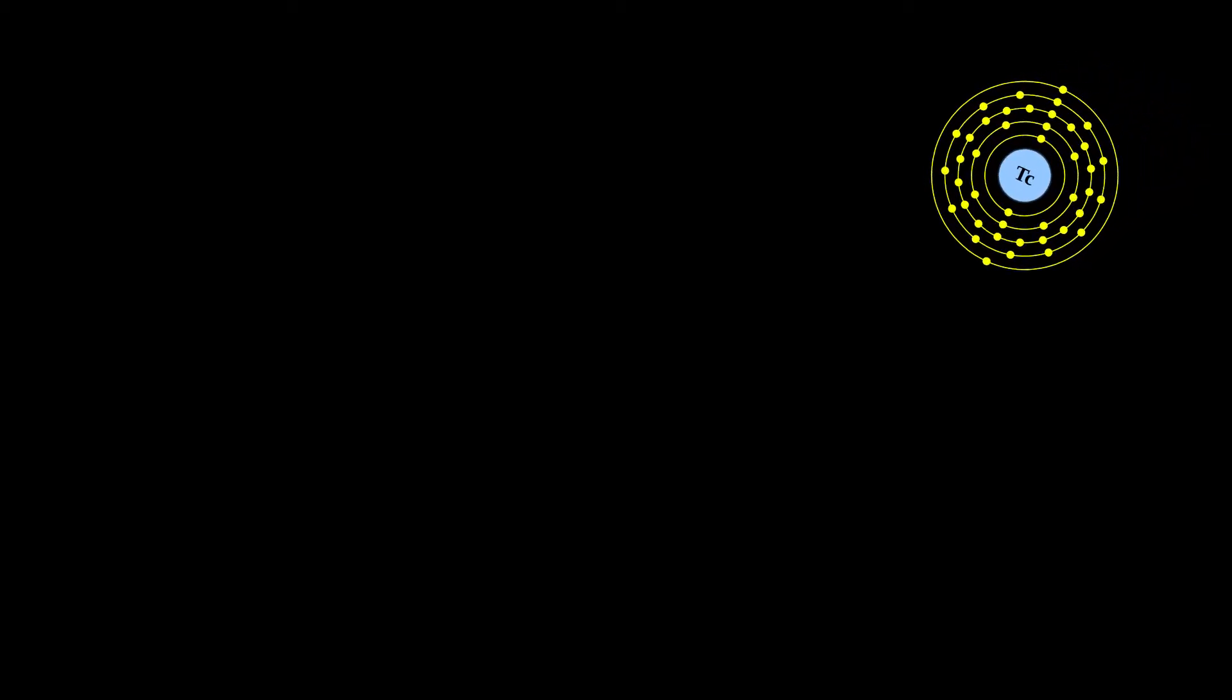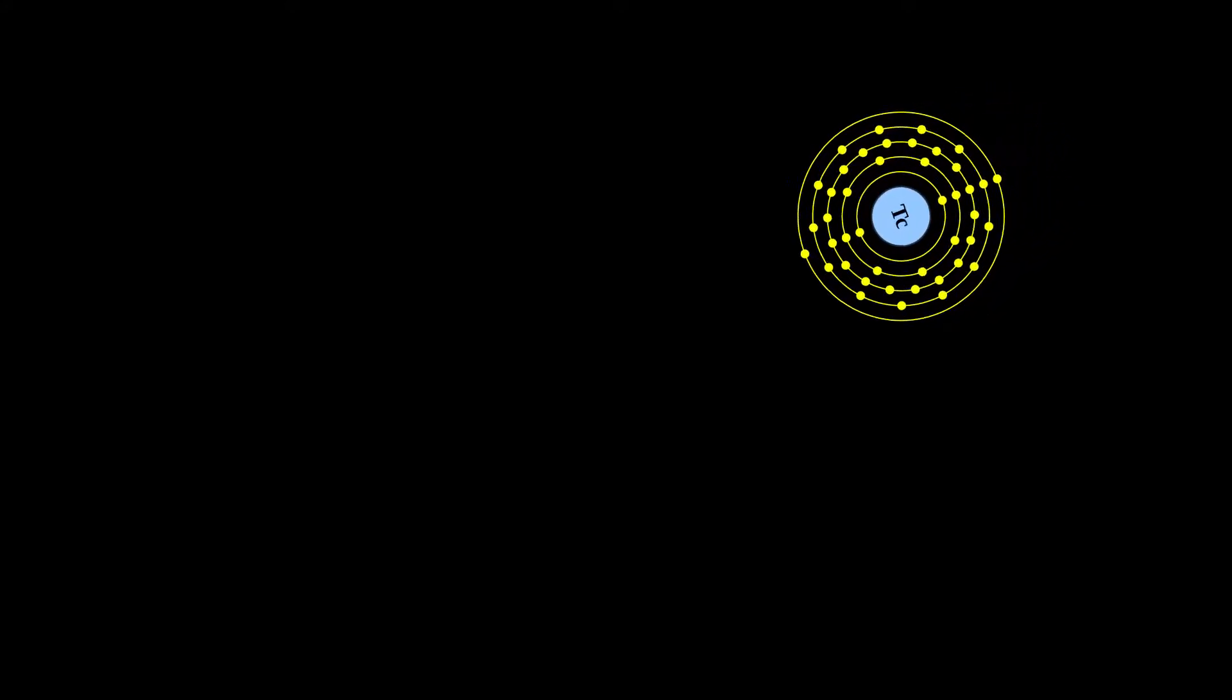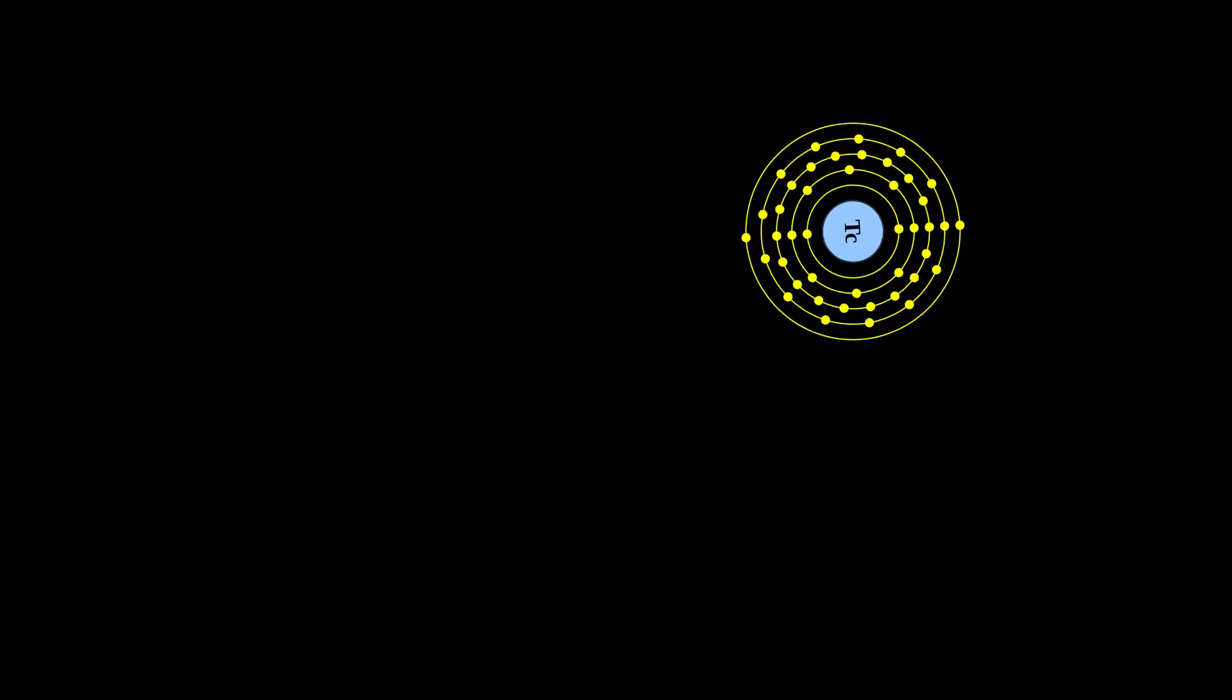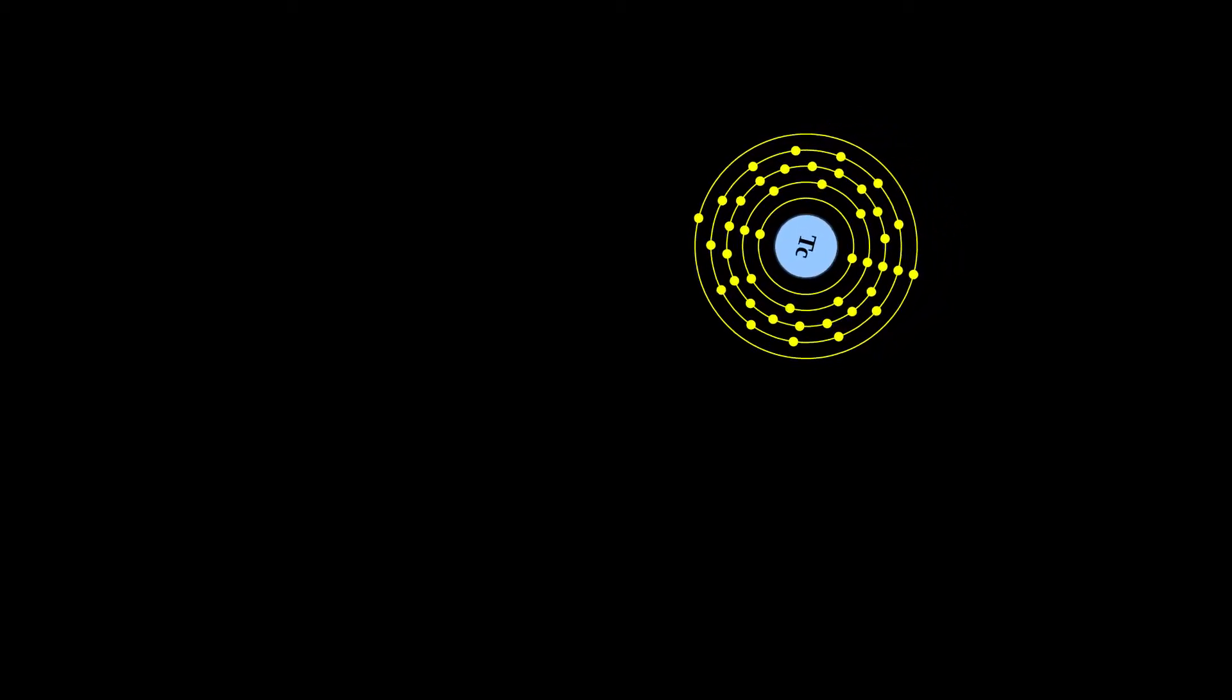This silvery-gray, crystalline transition metal lies between rhenium and manganese in group 7 of the periodic table, and its chemical properties are intermediate between those of these two adjacent elements.